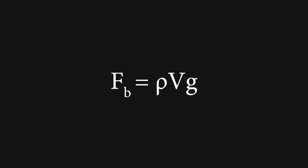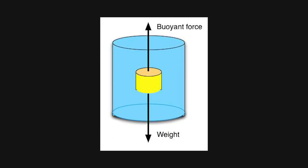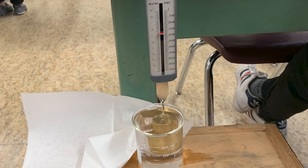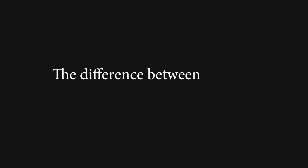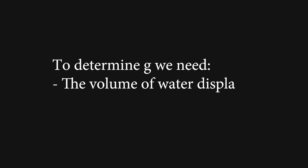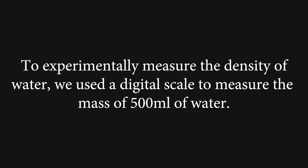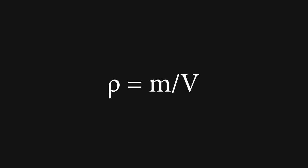For the buoyant force experiment, we used Archimedes' principle to determine g. The buoyant force equals rho·v·g. We compared the weights of an object unsubmerged and submerged underwater; the difference equals the buoyant force. We also needed the volume of displaced water and the density of water. Volume was calculated by measuring the cylindrical masses' dimensions using v equals π·r²·h. To experimentally measure water density, we used a digital scale to measure the mass of 500 milliliters of water. The mass of water — subtracting the container weight — was 505 grams, giving a density of 1.01 grams per milliliter, or 1010 kilograms per cubic meter.